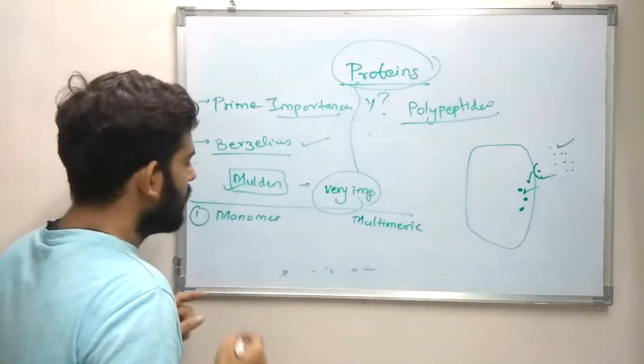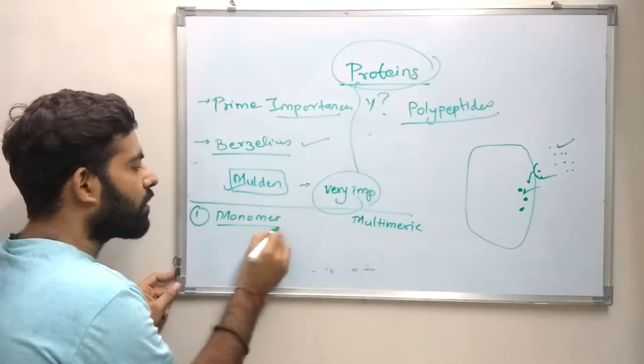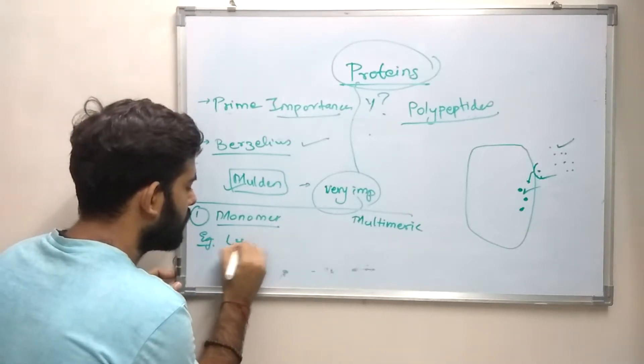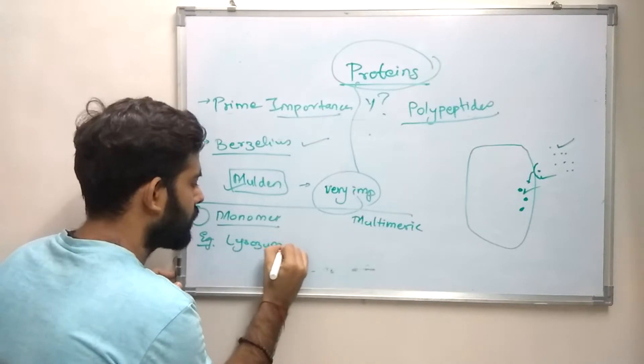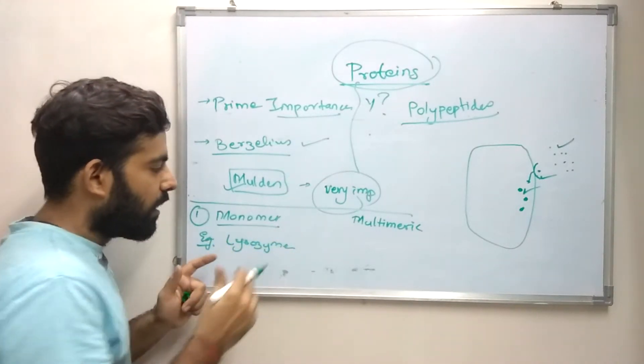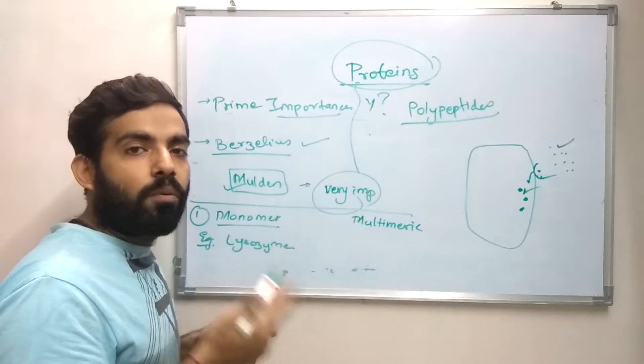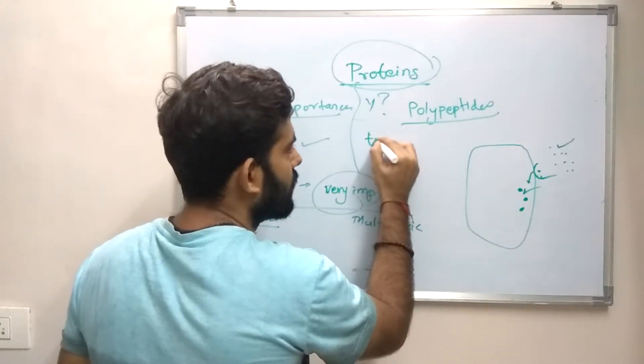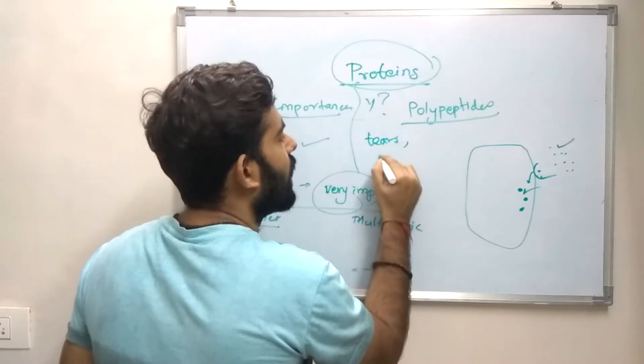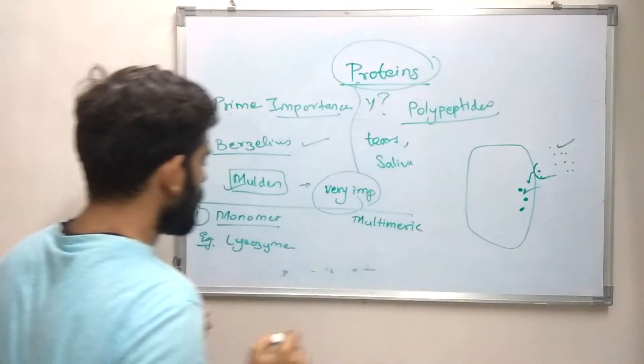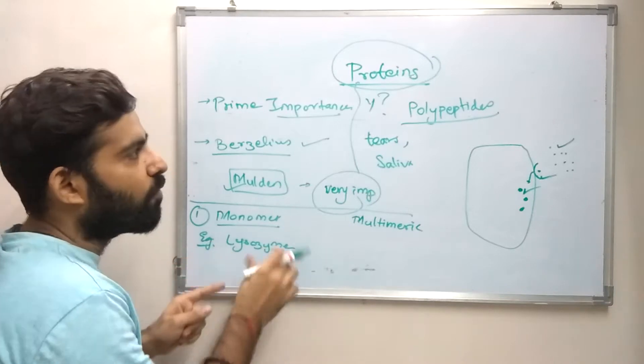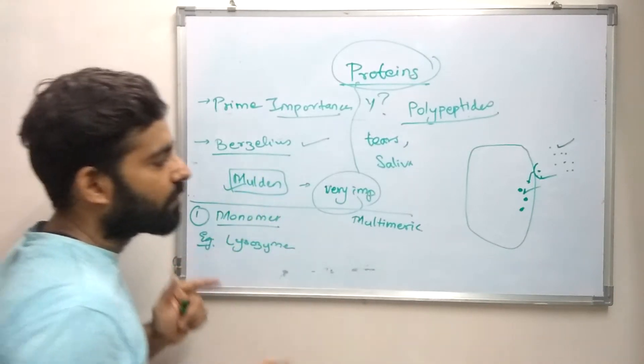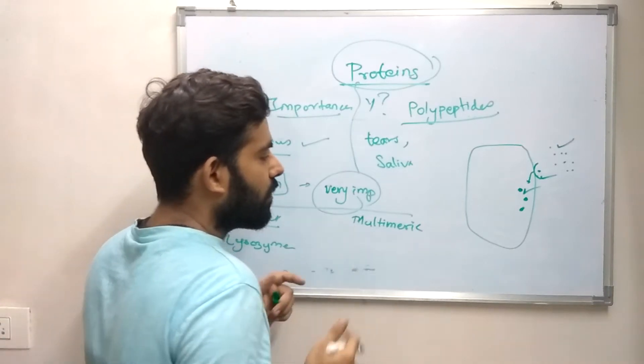The examples for monomeric proteins include lysozyme. Now what is this lysozyme? Lysozyme is the bacterial cidal component of the enzyme which is present in the tears, saliva. Lysozyme consists of only one polypeptide chain hence it is known as monomeric.